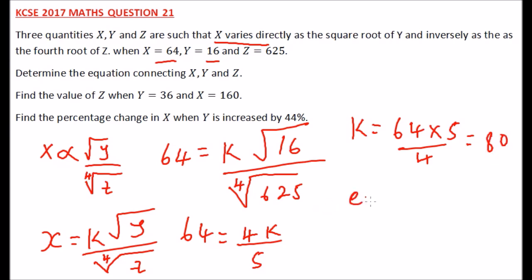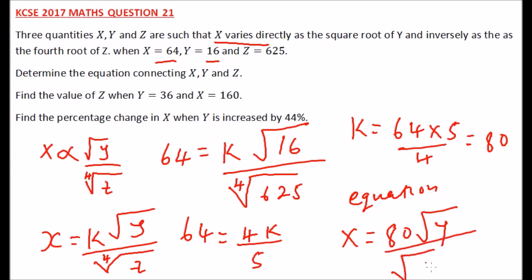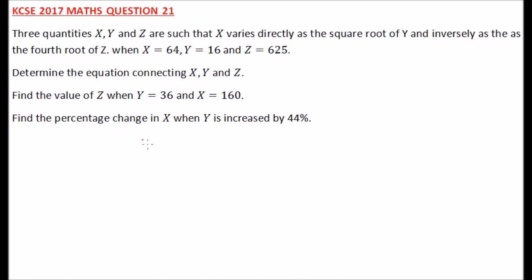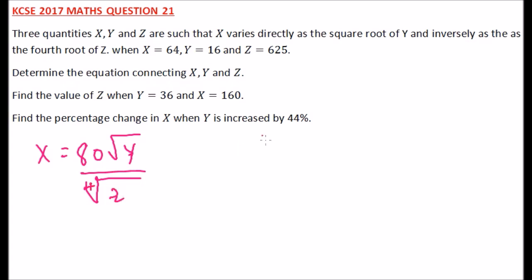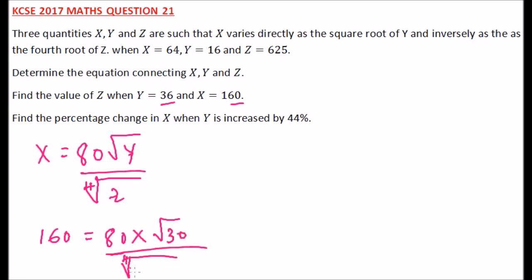Dividing 64 multiplied by 5 by 4 gives you k is equal to 80. Now the equation connecting x, y, and z is: x is equal to 80 times the square root of y divided by the fourth root of z. That is the equation connecting x, y, and z. Find the value of z when y is equal to 36 and x is equal to 160. We already have the formula, so we substitute: 160 is equal to 80 times the square root of 36 divided by the fourth root of z.